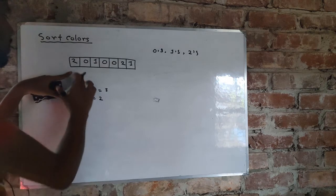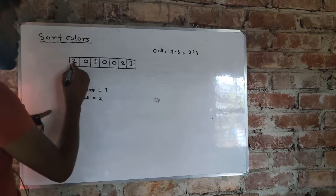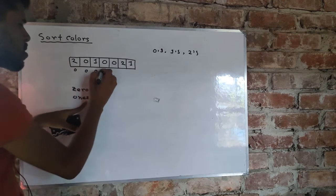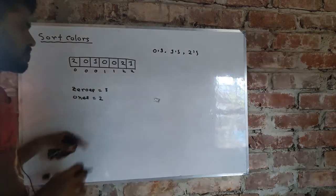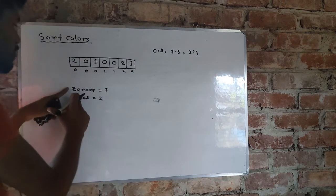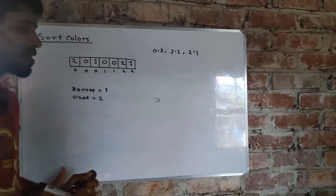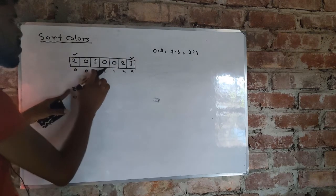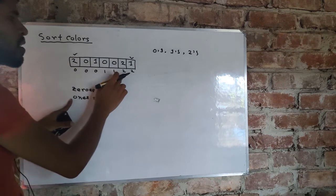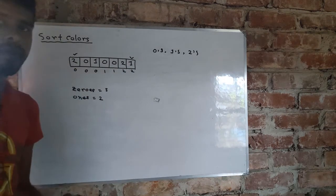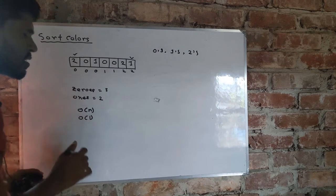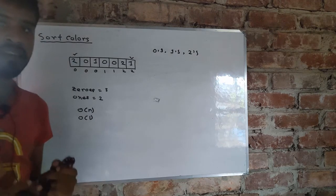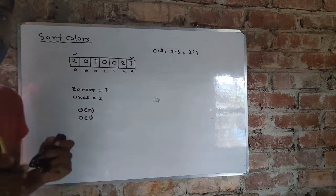Using those counts, we replace the first three elements with zero, then the next two elements with one, and the rest with two. We find the counts by scanning the array once left to right, then iterate again to fill in the values. This solution is O(n) time and O(1) space, but it is a two-pass algorithm because we scan the array twice. Now let's see how to solve this in a single pass.